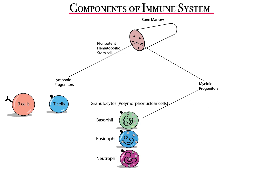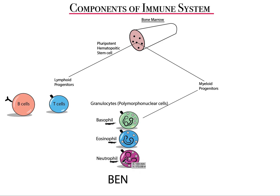Now let's move on to myeloid progenitors. In blood, they can become granulocytes. As the name suggests, granulocytes have granules and a unique morphology with a multi-lobed nucleus. A tip to remember the cell names under the granulocyte category is 'BEN': B for basophil, E for eosinophil, and N for neutrophil. Another tip: all granulocytes have 'phil' in common in their names.